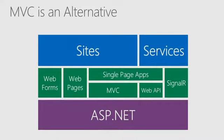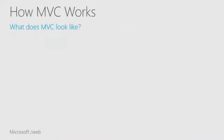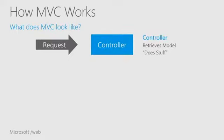MVC is an alternative — just one of many framework choices you have running on top of ASP.NET. A request comes in and through a feature called routing goes to a controller. As was pointed out earlier, a URL doesn't map to a file — it maps to something else. In this case it's a controller action, which is just a method. That method does some stuff — it's a highly technical term — and its end result is some kind of data, like a customer object or a string.